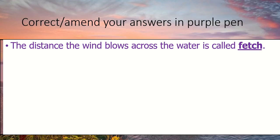Right, first question: the distance the wind blows across the water is called the fetch. As we found out in the last video, the bigger the fetch, the more powerful the wave. So the fetch itself is the distance the wind blows across the water.